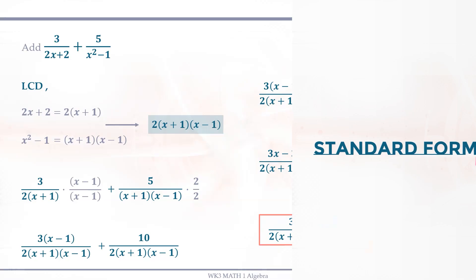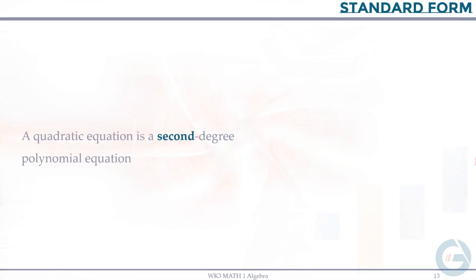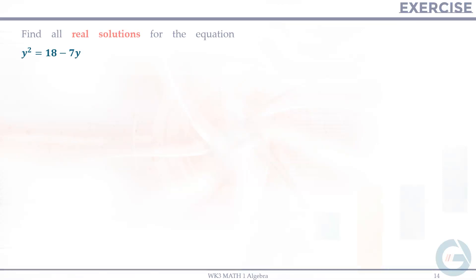Now, the standard form of a quadratic equation. A quadratic is a second-degree polynomial equation. The standard form is ax² + bx + c = 0, where a is the coefficient of x², b is the coefficient of x, and c is the constant. Importantly, it is equated to 0. For example, given y² = 18 − 7y, we transfer 18 and −7y to the left side to get the standard form: y² + 7y − 18 = 0.